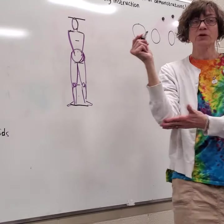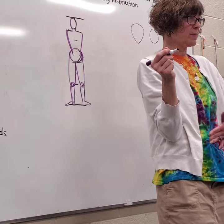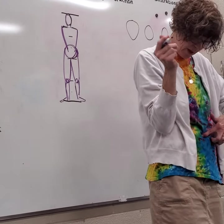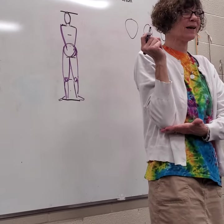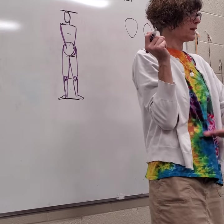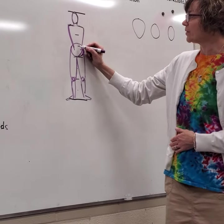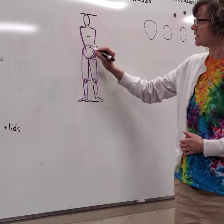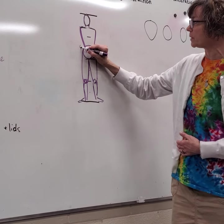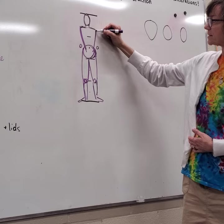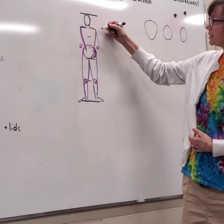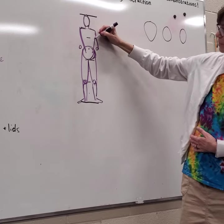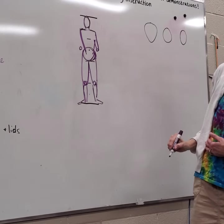Now let's draw the arms. Your elbows go to your belly button — here's my belly button and here's my elbow, and that's the same for everybody. So right where the belly button is I'm going to put a line to represent the elbow joint. From the outside of the shoulder, using a straight line, I go into the armpit and make another straight line there.